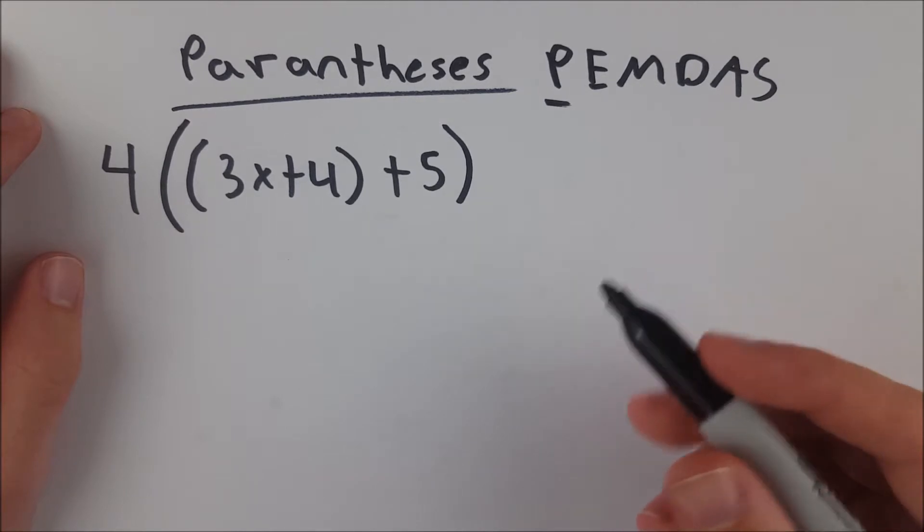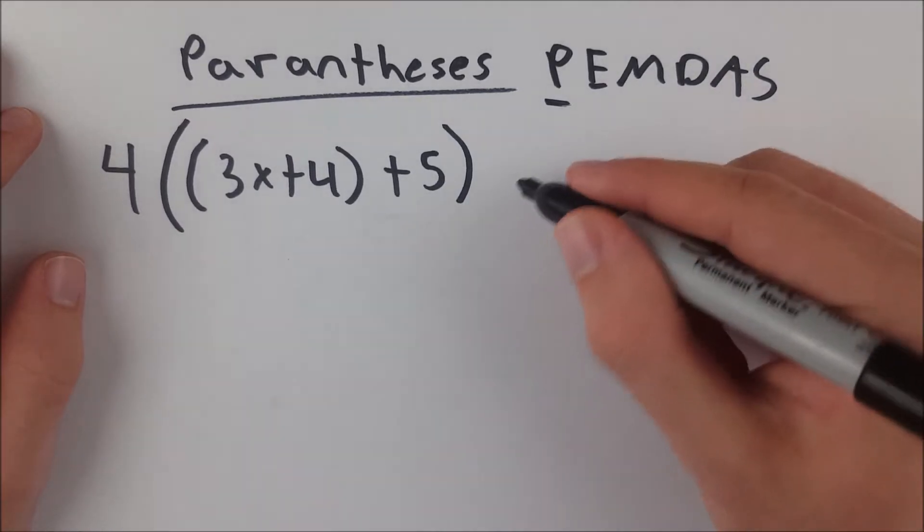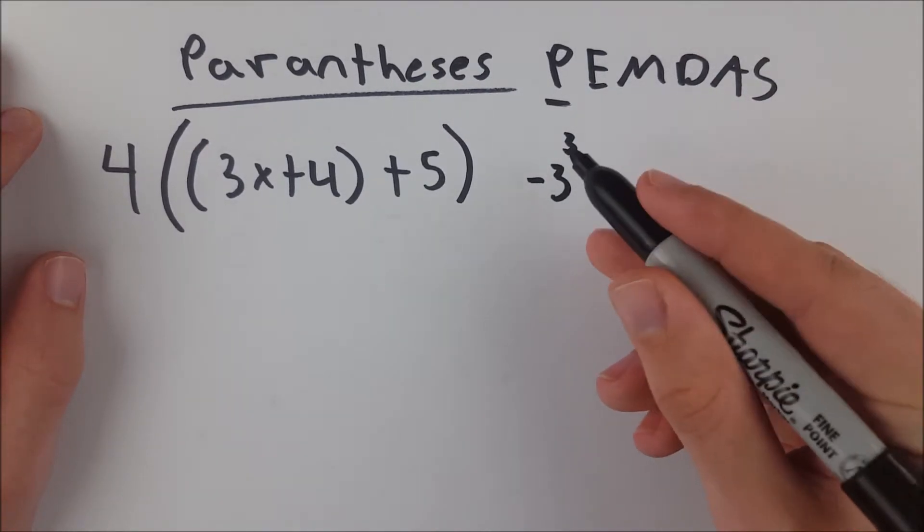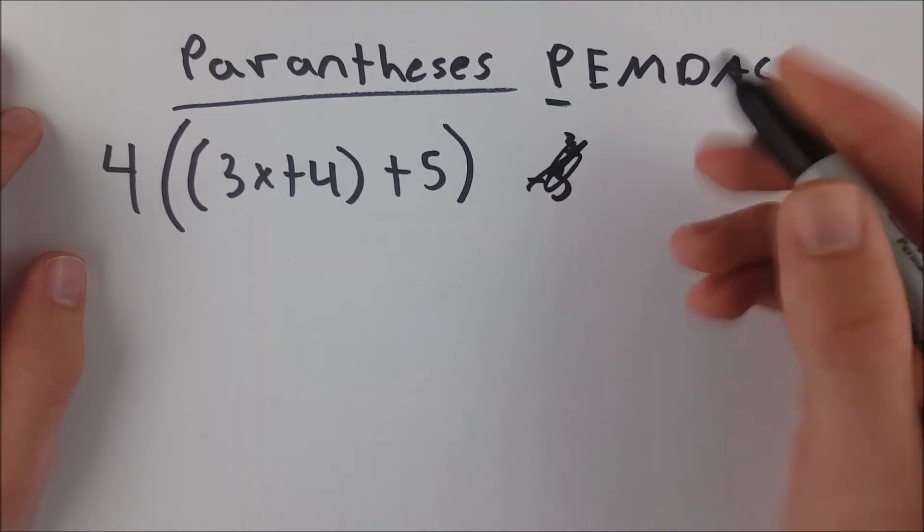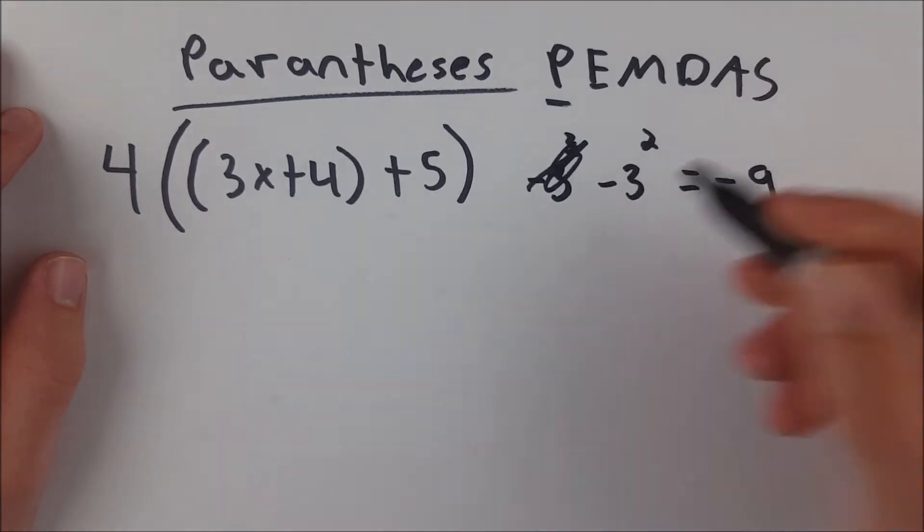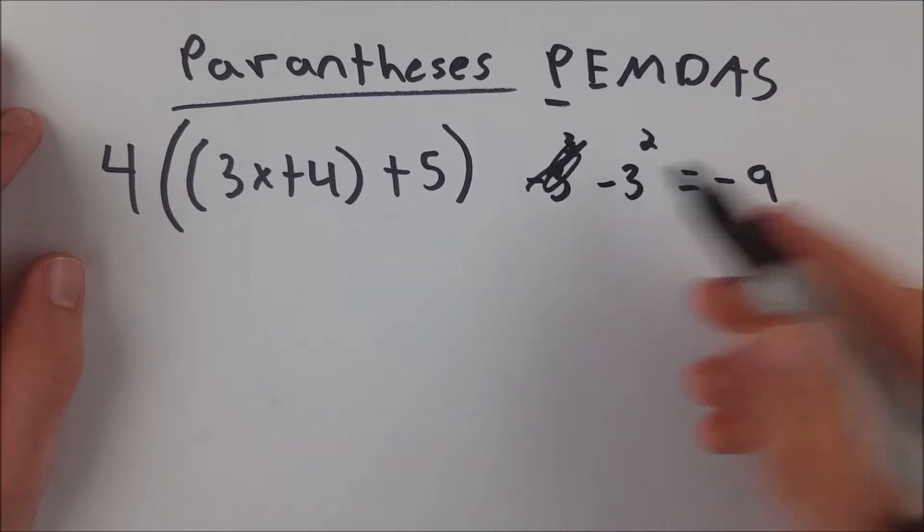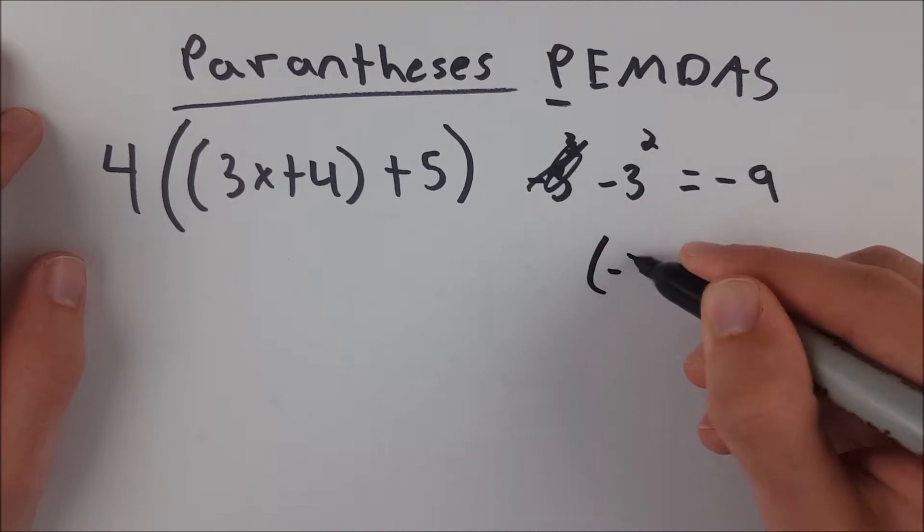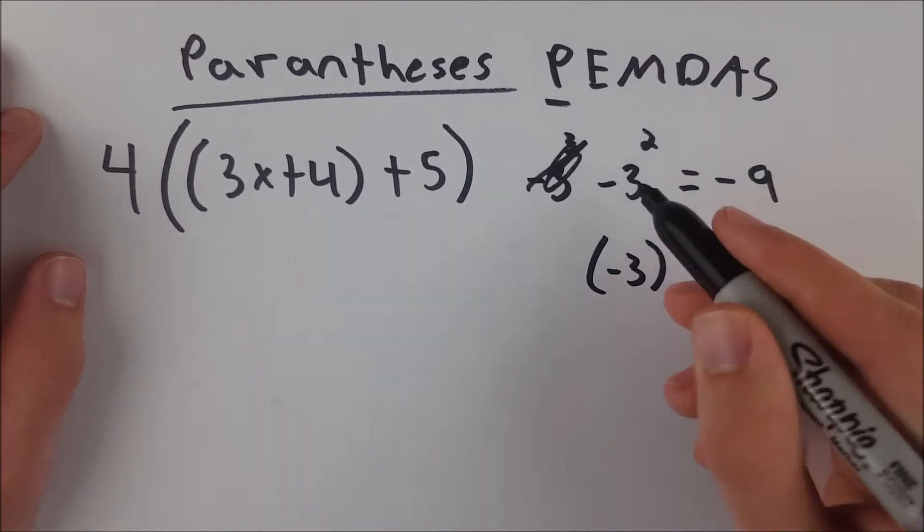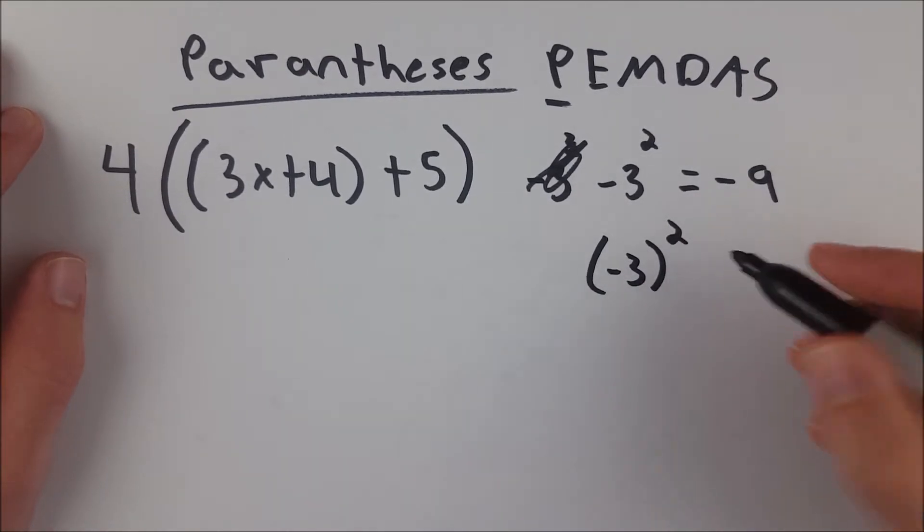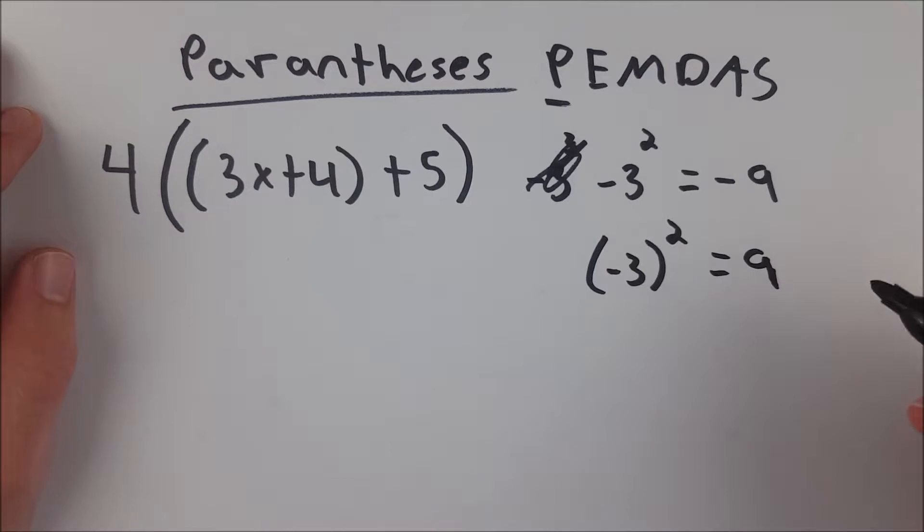For example, if you want a calculator to square negative 3, you can't just write it like this, usually. The calculator will usually give you negative 9 if this is what you put in. And if you're trying to square negative 3, that is not the correct answer. So what you have to do is put negative 3 in parentheses, because what the calculator is doing is squaring 3 and then taking its negative, which is negative 9. But if you square negative 3, you get positive 9.